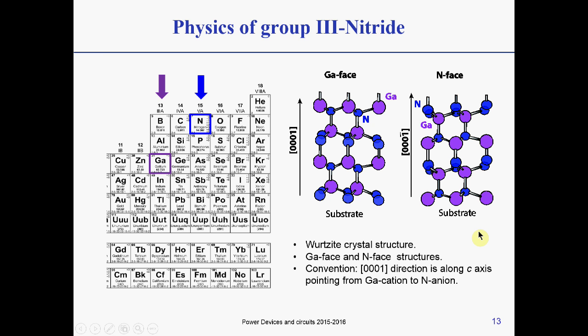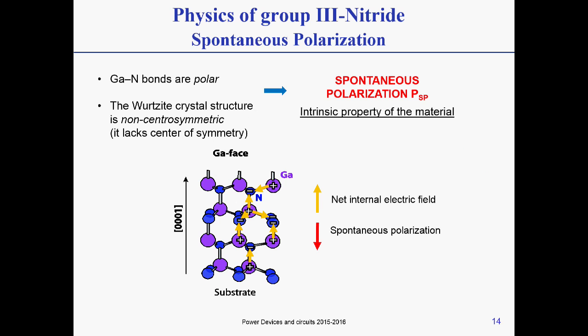You have these two possibilities. The structure is a wurtzite crystal structure, as I mentioned, Ga-face and N-phase, and these are the directions just for convention. So, why is it so special, the gallium nitride, and in particular the 3-nitride materials? They are special because, and in this they are different from the other 3-5 materials, such as, for example, gallium arsenide. They have a property which is called spontaneous polarization.